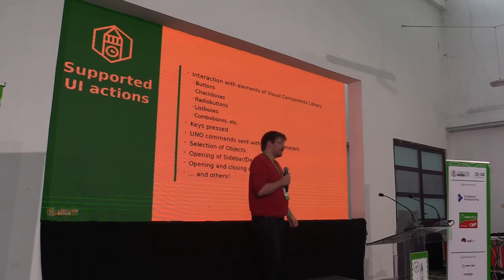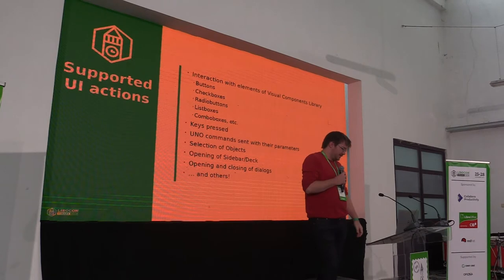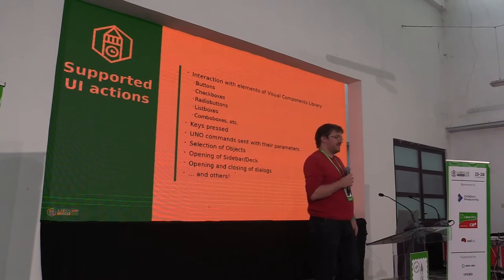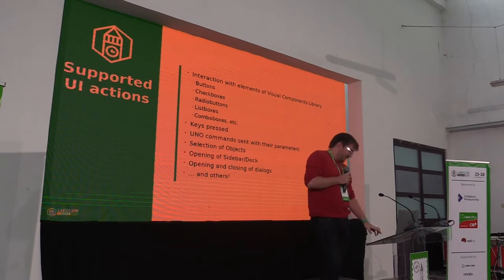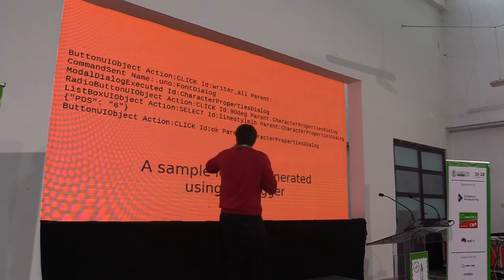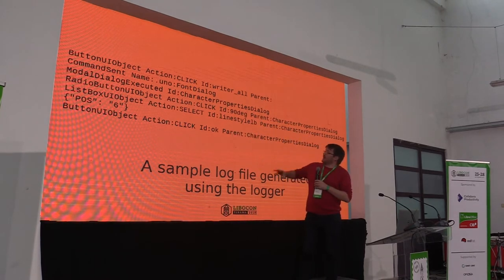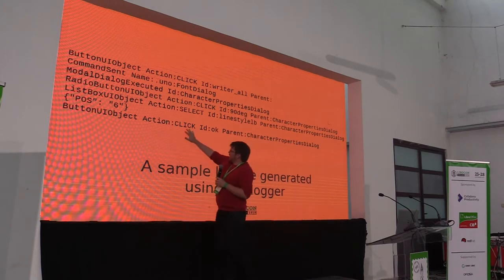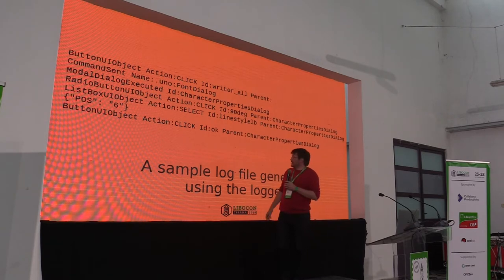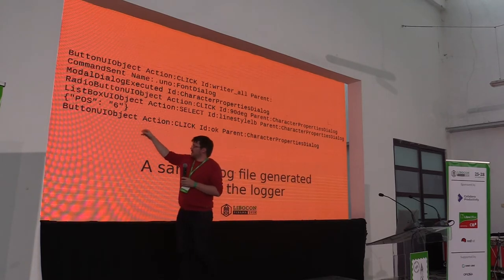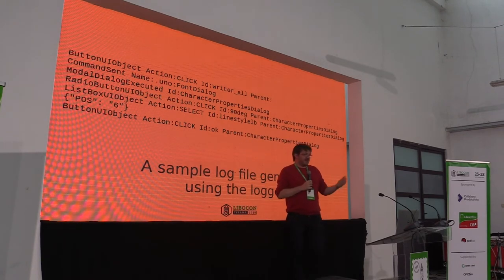Here is an example of a log file. You can always see, at the beginning, the name of the responsible object, then some kind of action, an ID of the object so we can identify it, and potentially some additional information — like some parameters — that we can use to identify the object.